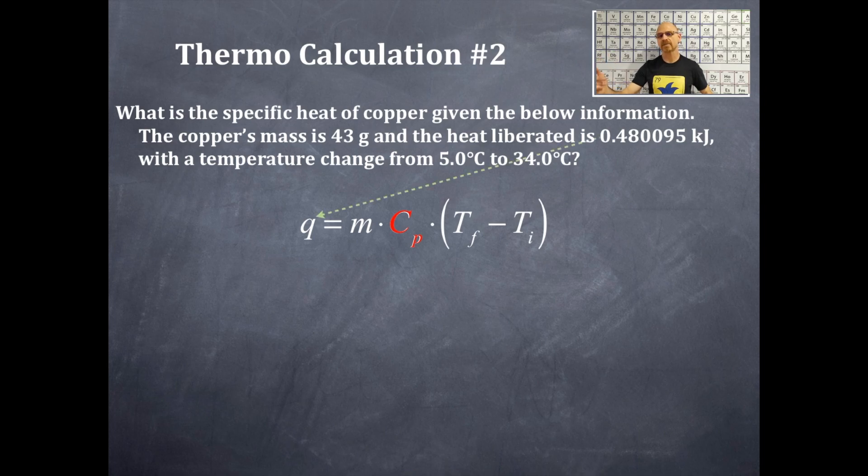So this is what we've got. We've got our heat term is the q. Now it is in kilojoules and we're going to have to convert that into joules. So hopefully you remember that calculation, that conversion. The mass is right here at 43 grams. We're going to plug that right in for the m for the mass. The final temperature is the ending temperature and that's the 34.0 degrees Celsius. The beginning temperature, that's where the temperature starts off at, is 5.0 degrees Celsius and that is right there.